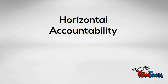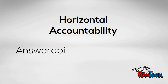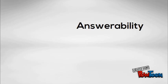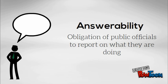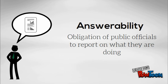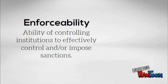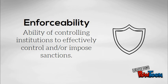In this learning alliance we're going to focus on horizontal accountability. Horizontal accountability has two main connotations: answerability and enforceability. Answerability is the obligation of public officials to report on what they are doing. Enforceability, on the other hand, is the ability of controlling institutions to effectively control and/or impose sanctions.